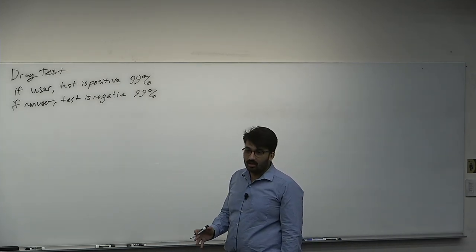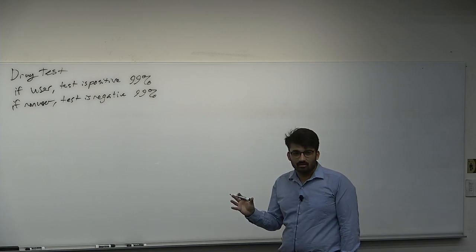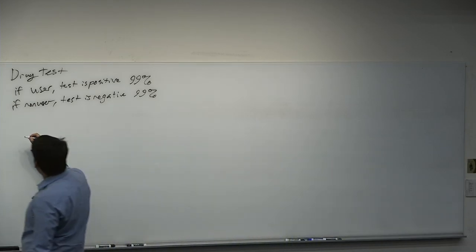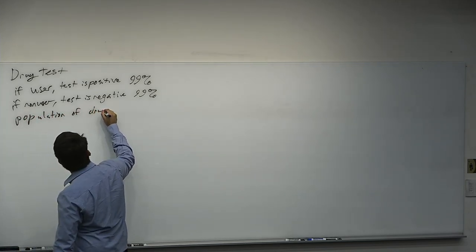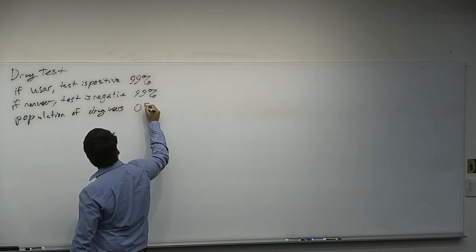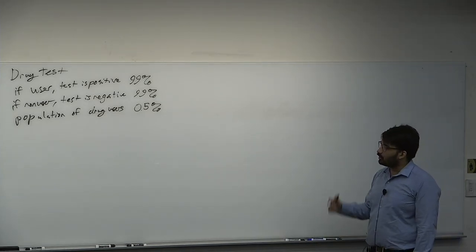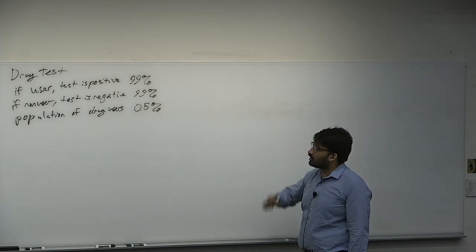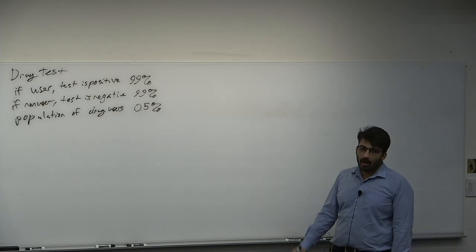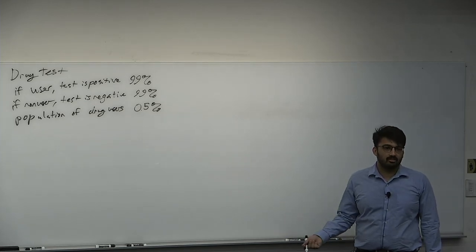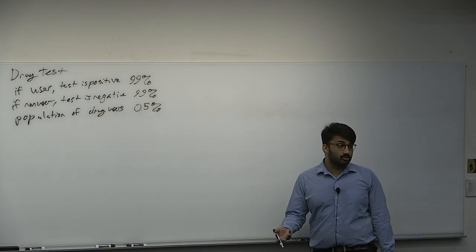Sometimes a randomized algorithm will tell you if the answer is no, it's guaranteed to be no, but if the answer is yes, maybe there's a chance it's wrong — that's called a one-sided error. Let's say the population of drug users is 0.5%, so only one in every 200 people uses the drug. We take a totally random person, give them a drug test. If the test is positive, what's the probability they're actually a user? How effective is random drug testing?